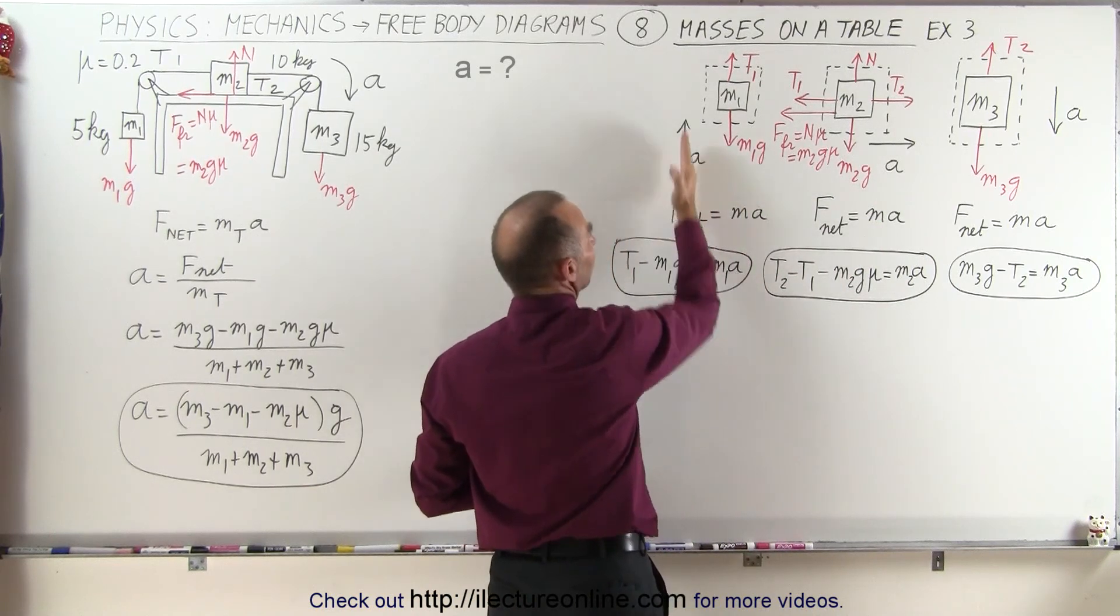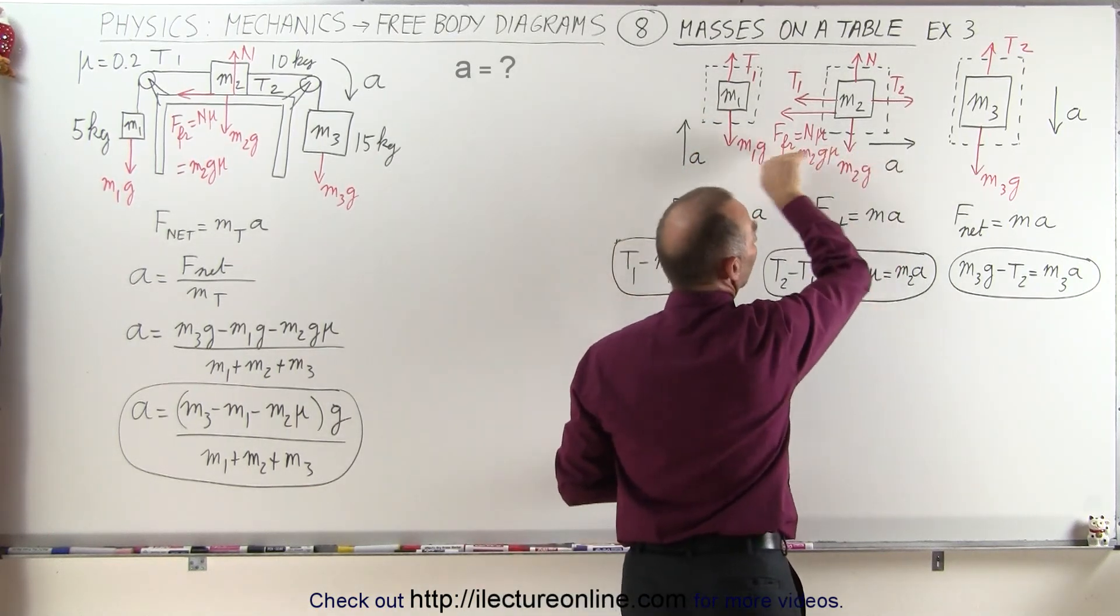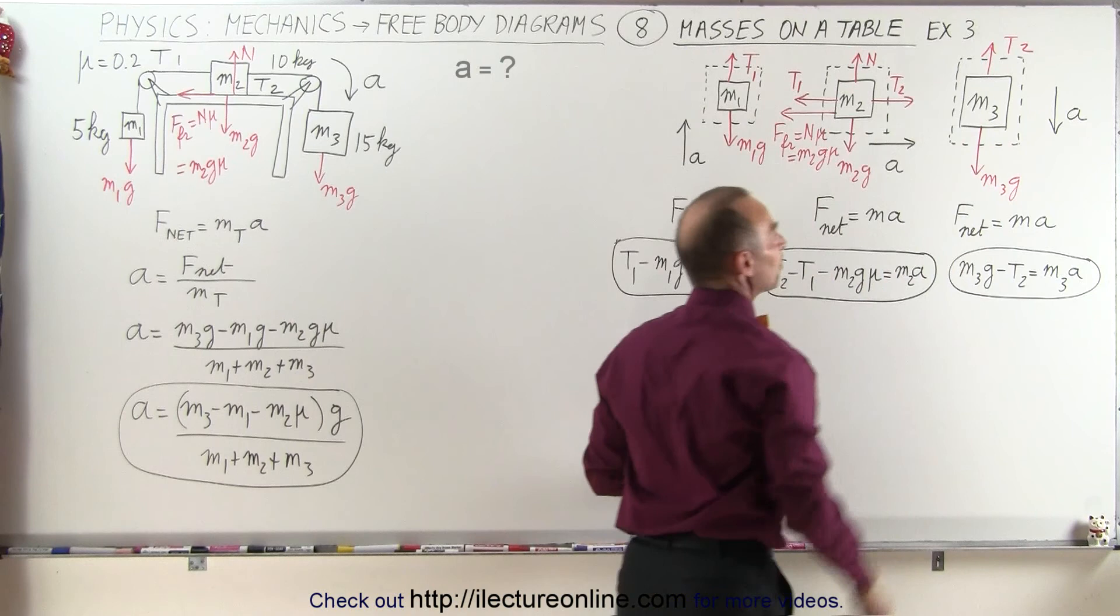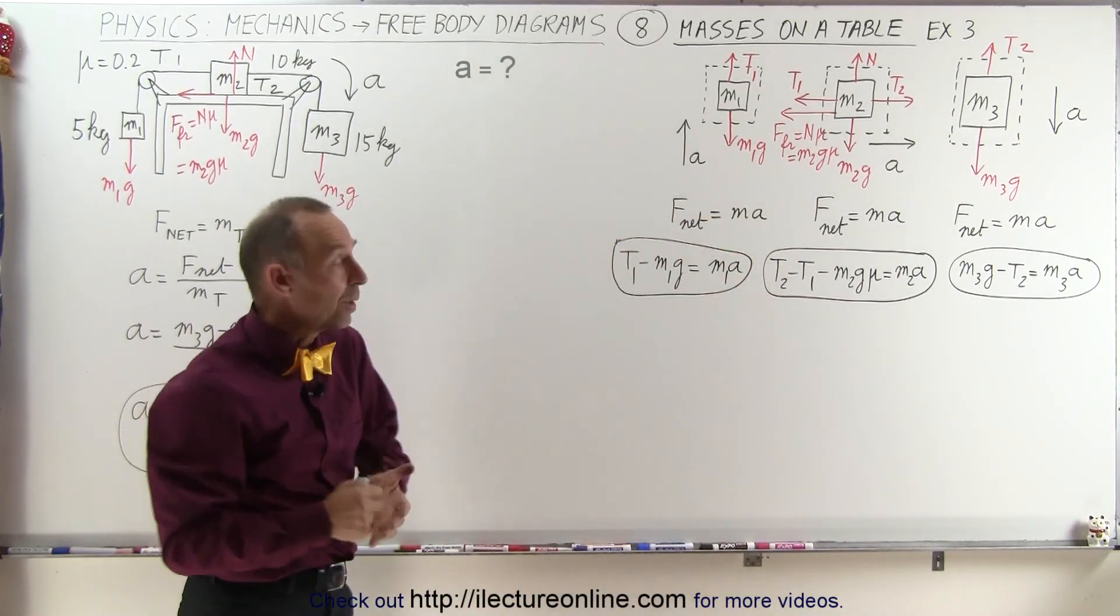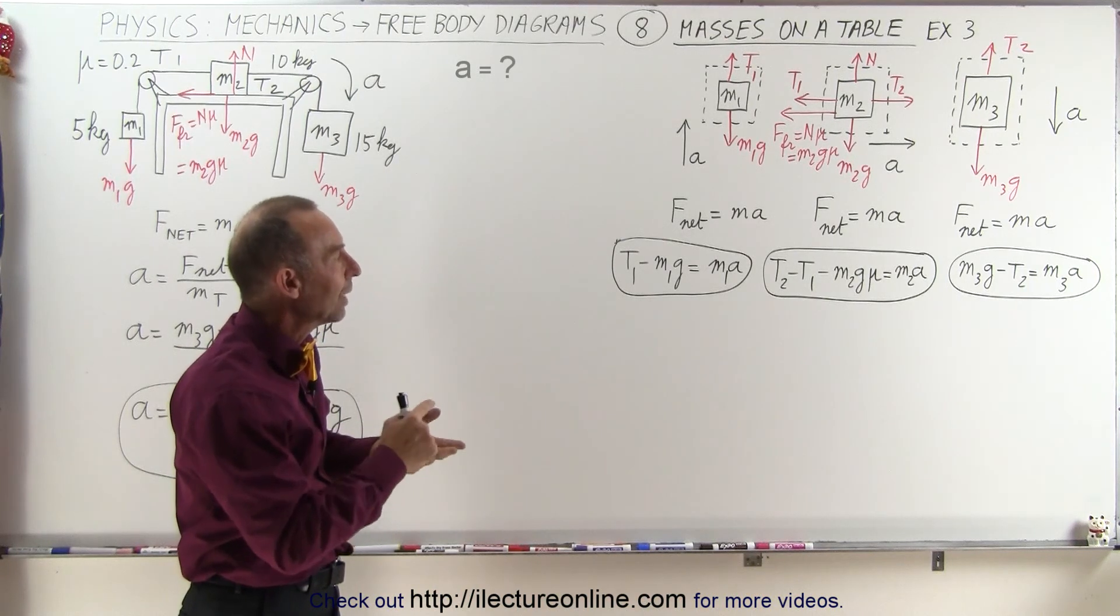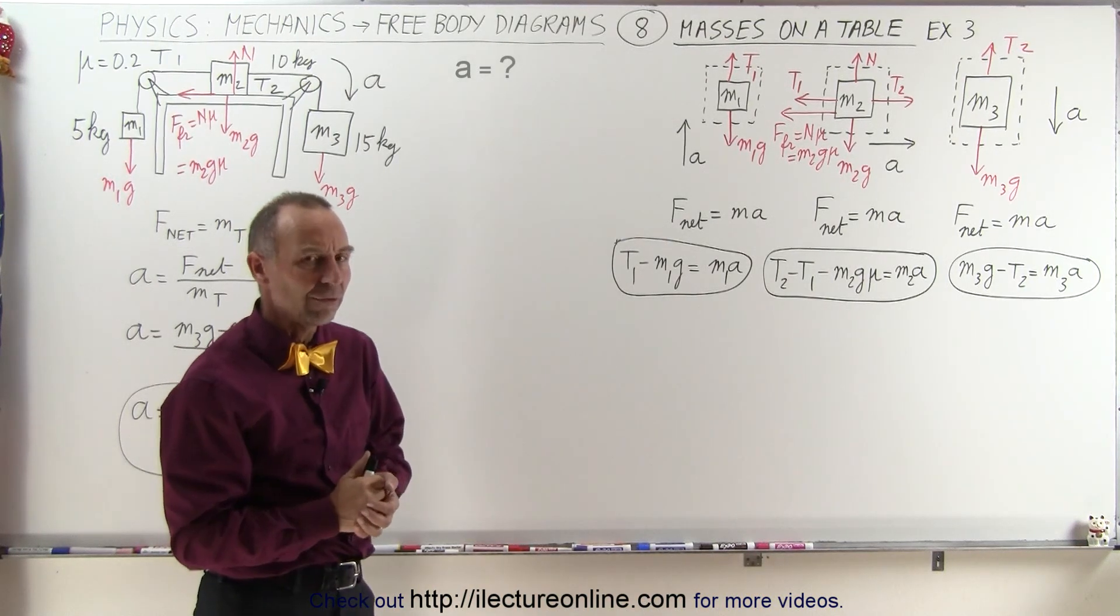Notice that for the first mass, the acceleration is upward, for the second mass it's to the right, and for the third mass, it's downward. But notice, we now have three equations and three unknowns: T1, T2, and the acceleration that we're looking for. So we have to eliminate both of the tensions.